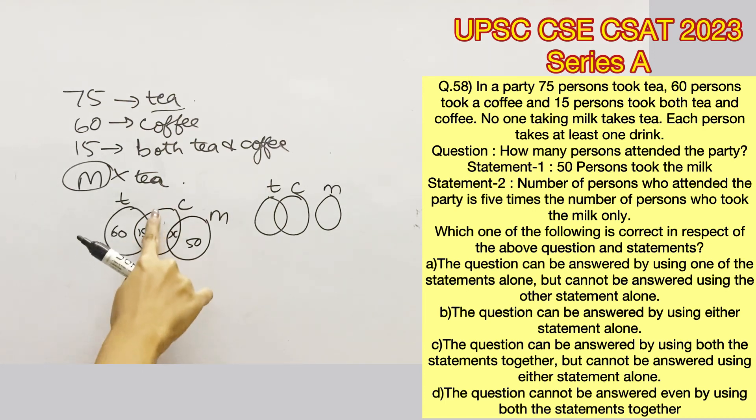To find the number of people who took coffee alone, we'll have to subtract 15 and X from 60. And to find the number of people who took milk alone, we'll have to subtract X from 50, because we don't know who took both coffee and milk.